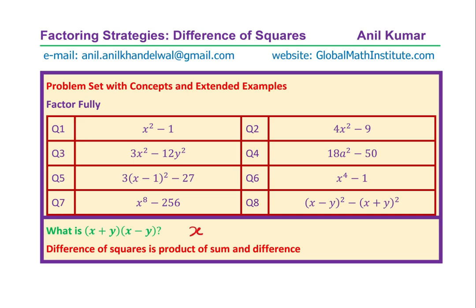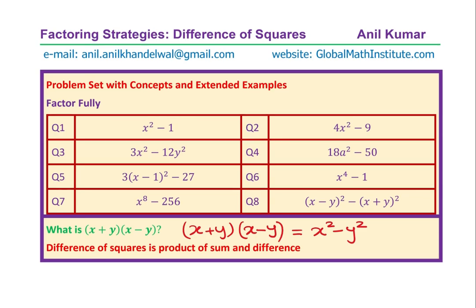We just figured out that x plus y — the sum of two variables x and y — times the difference x minus y, equals x squared minus y squared. Factoring is really the reverse process: given terms like x squared minus y squared, we need to write them in factored form as x plus y times x minus y. Now let us begin answering the questions.